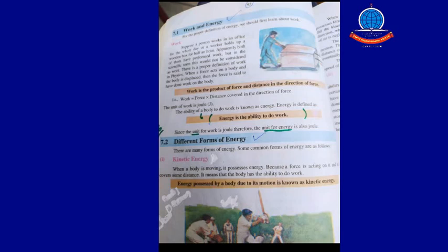The ability of a body to do work is known as energy. So energy is defined as the ability to do work. Since the unit for work is Joule, therefore the unit for energy is also Joule. Today we have covered the definition of work, the definition of energy, the equation, the units, and the examples. You must remember it and write it in your copies. Allah Hafiz.